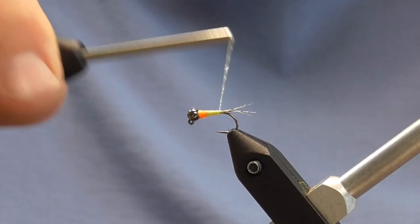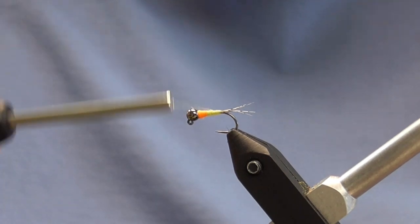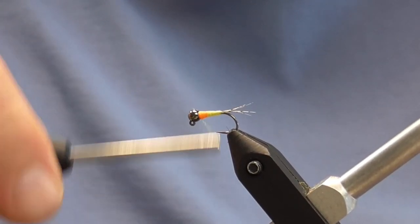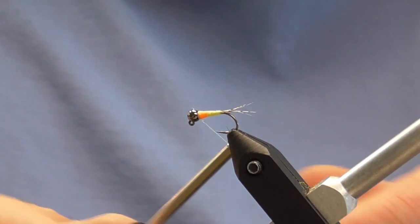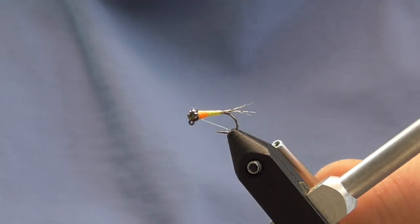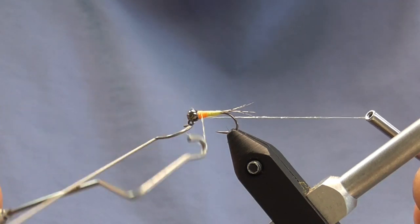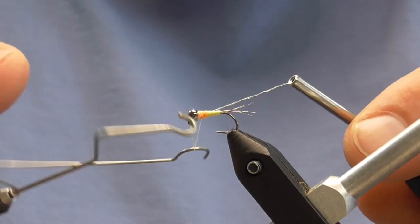This body quill material is translucent, but the more wraps you make, the more of the predominant body quill cover color comes through. In other words, if I continue to wrap, it would become more and more yellow.